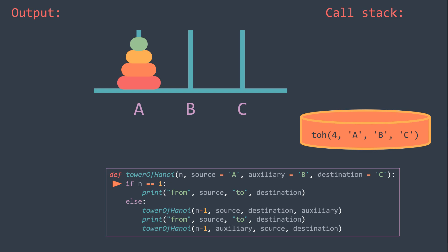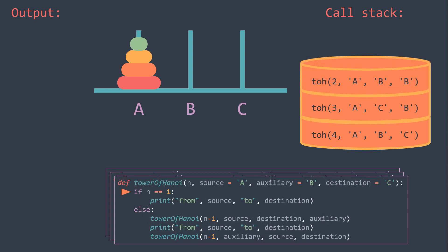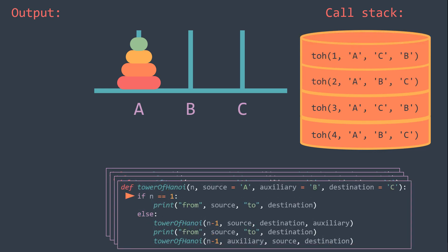So N is not equal to 1, so we call the function with N-1, and auxiliary and destination are switched. N is not equal to 1, so we call the function with N-1, and auxiliary and destination are switched. N is still not equal to 1, we call the function with N-1, and auxiliary and destination are switched. Now N is equal to 1, so we print: we move from source to destination — here source is A and destination is B — and we backtrack.